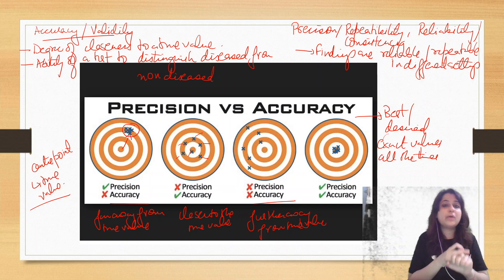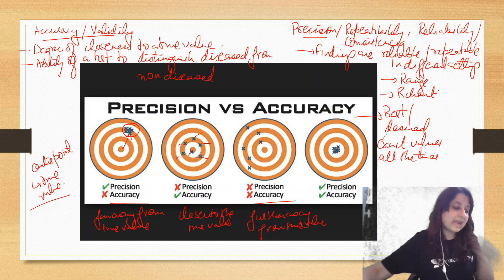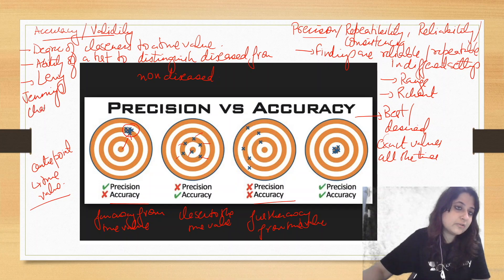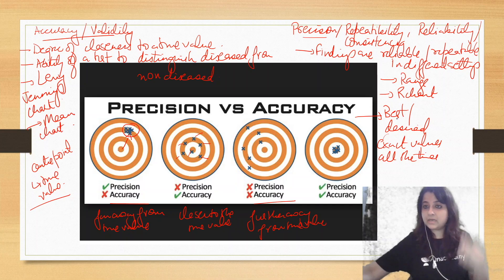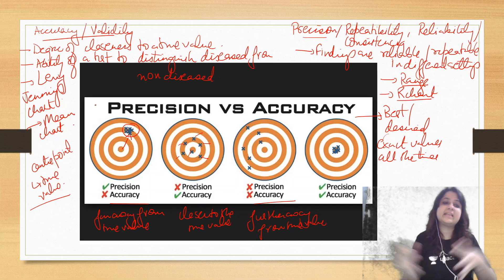Now in stats, you have certain charts which can measure precision and repeatability. Precision and repeatability can be measured by a range or hour chart. And accuracy or validity can be measured by what is known as a Levy Jennings chart. You can just know the names. Maybe this can come as an option, or it is also known as mean chart. The chart to measure repeatability is range or hour chart, and the other one, accuracy, is Jennings chart or mean chart.